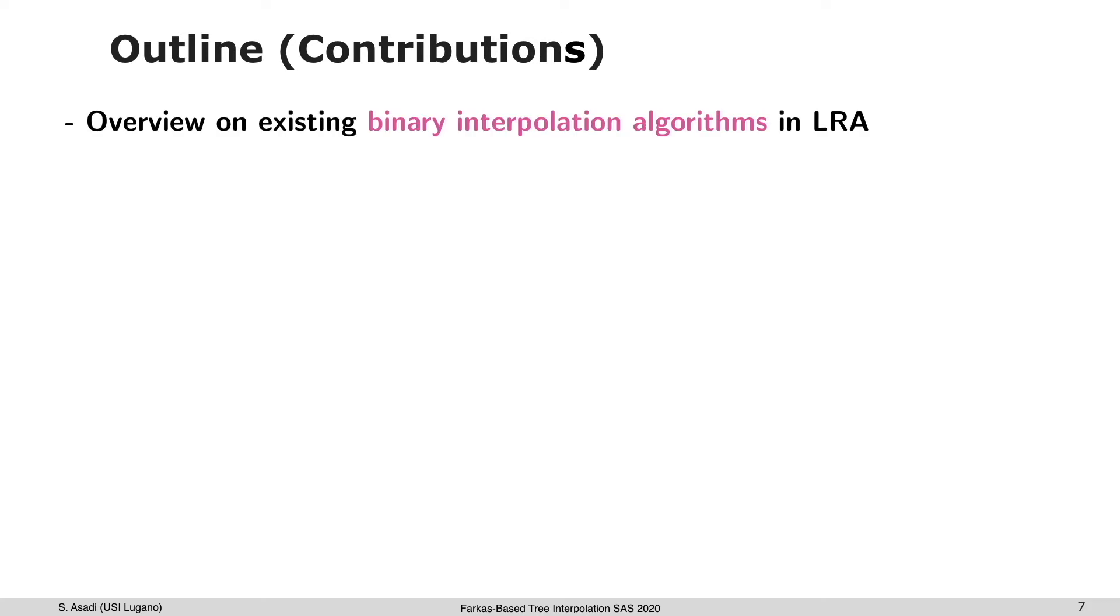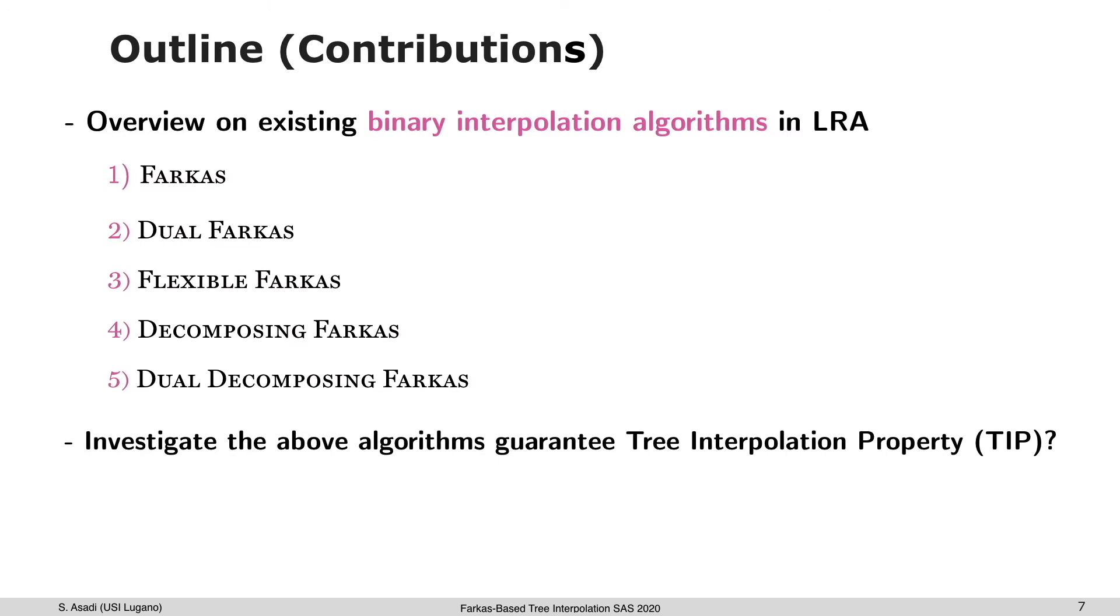In this talk, we are going to look into five interpolation algorithms for computing LRA interpolants based on Farkas's lemma. We will investigate which of them meet the tree interpolation property and which do not. If they guarantee TIP, we will provide a general proof; otherwise, we try to find some constraints to make them guarantee the TIP.